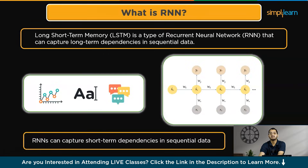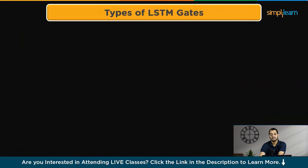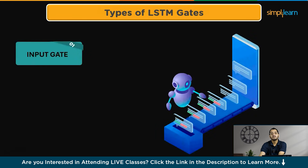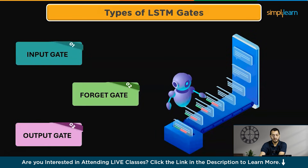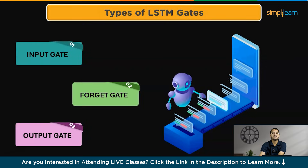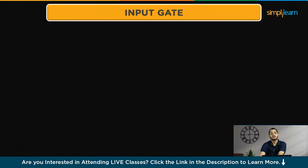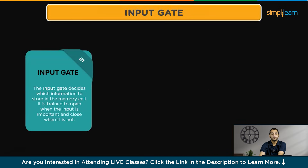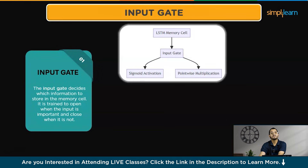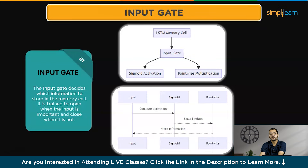LSTM models have three types of gates: the input gate, the forget gate, and the output gate. The input gate controls the flow of information into the memory cell, deciding what to store. It determines which values from the input should be updated in the memory cell. It uses a sigmoid activation function to scale the values between zero and one, then applies point-wise multiplication to decide what information to store.